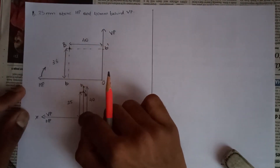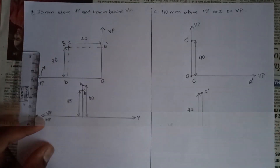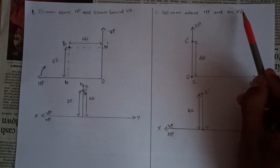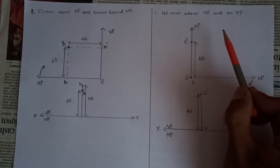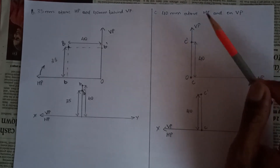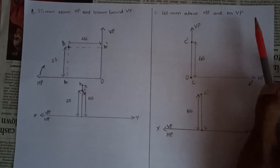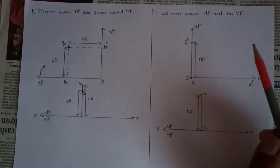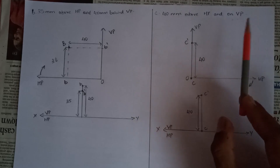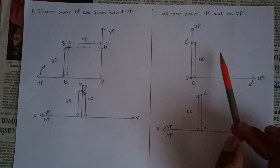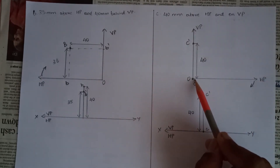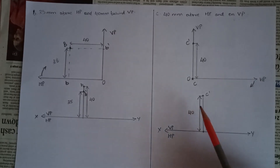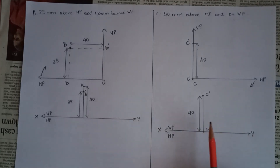Now for point C: it is 40 mm above HP and is on VP. Here you may get confused about which quadrant to consider — you can take it in either the first or second quadrant. It's easier to take it in the first quadrant. C-dash comes 40 mm above HP, and point C falls on VP. When you represent it on the XY line, points C and C-dash are 40 mm apart.